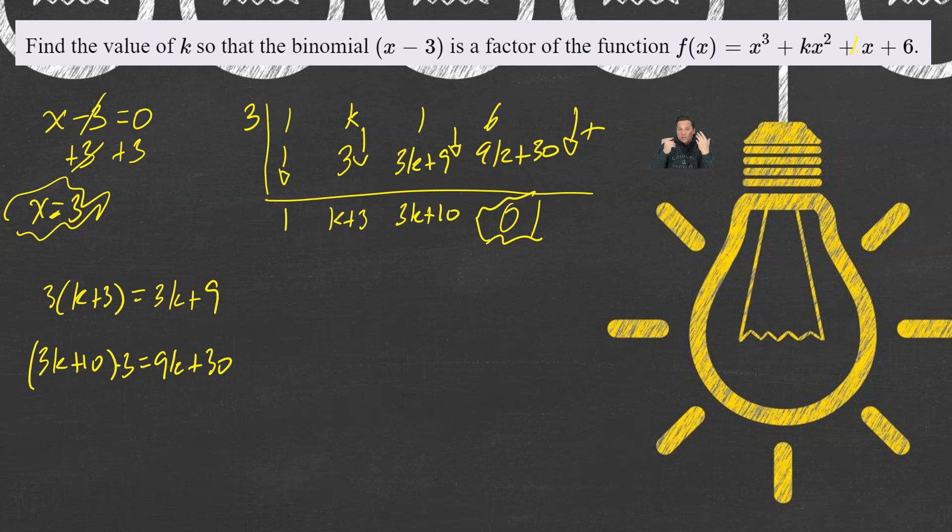So, let's create a small equation, and find the value of k that makes that true. So, what I mean is the following. It has to be the case that 9k plus 30, which is this value, 9k plus 30, plus the 6, has to be equal to 0. We can find k from there. So, let's do that.